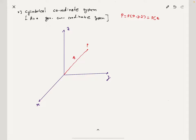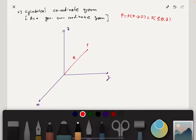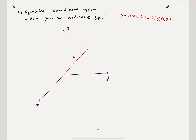The coordinates are Rho, Phi, and Z axis. Rho, Phi, and Z — where Z represents the height.